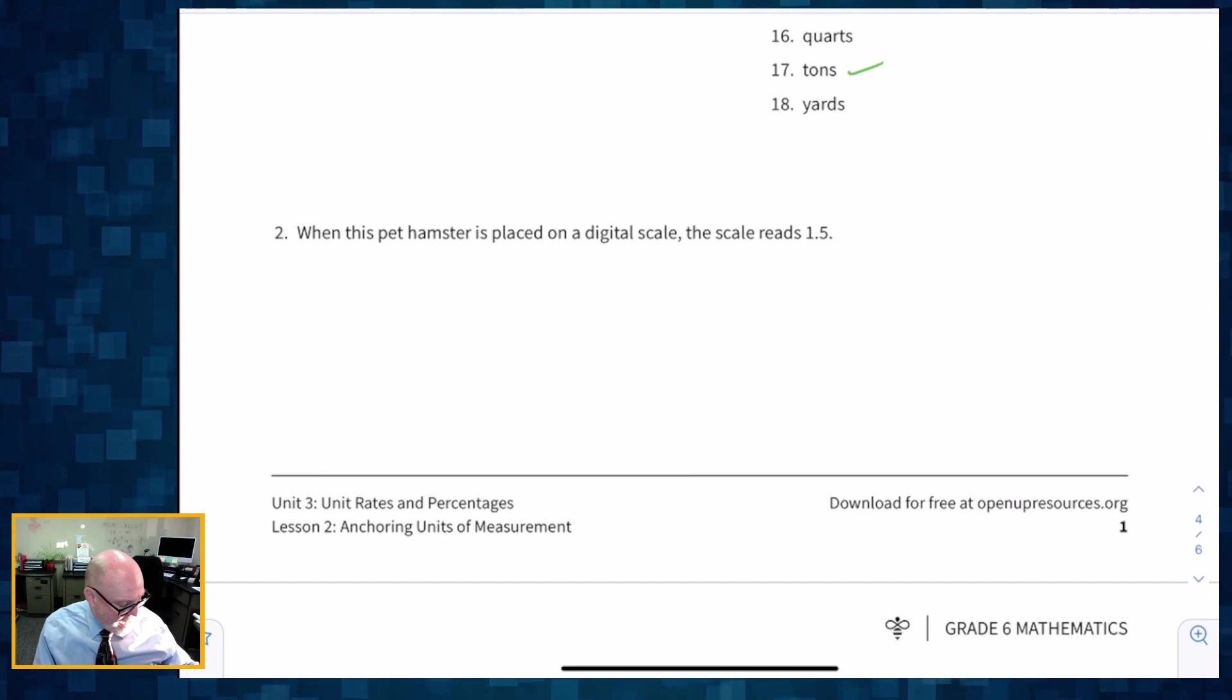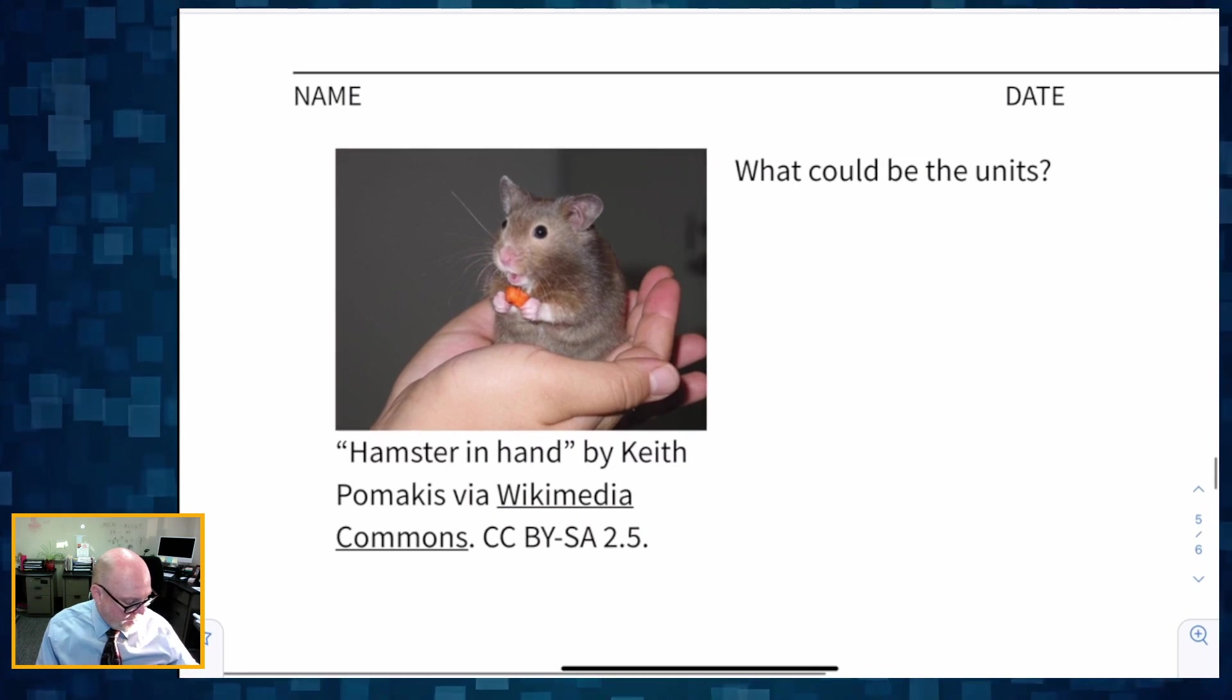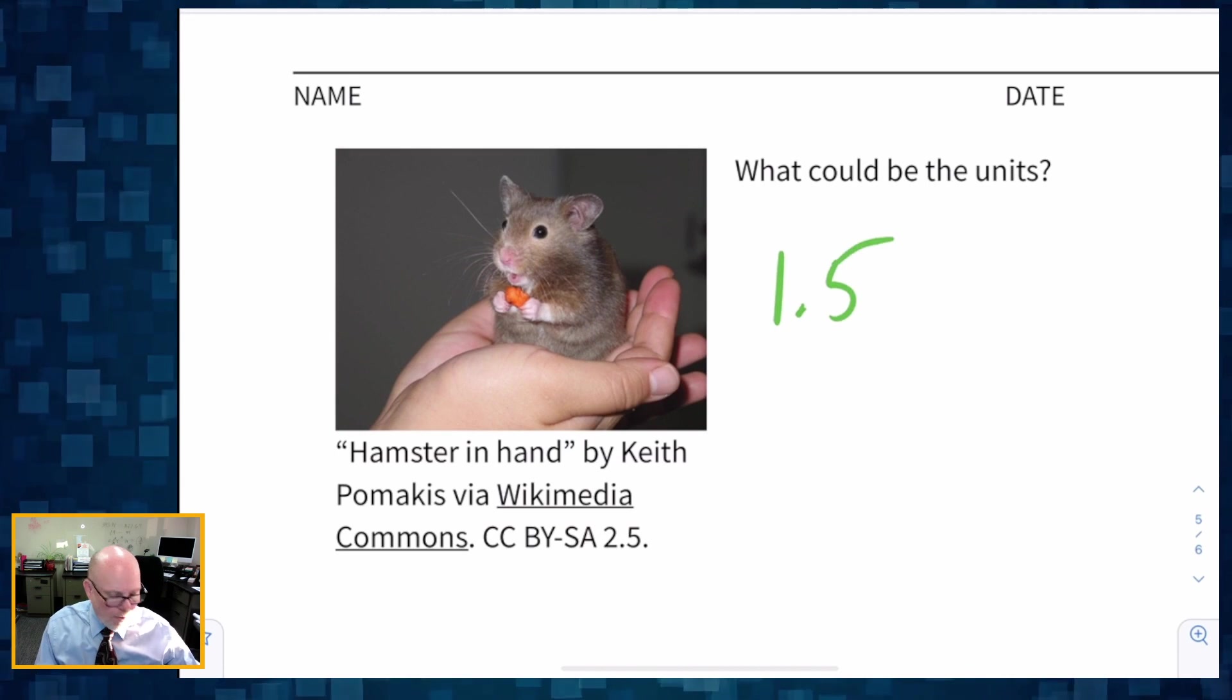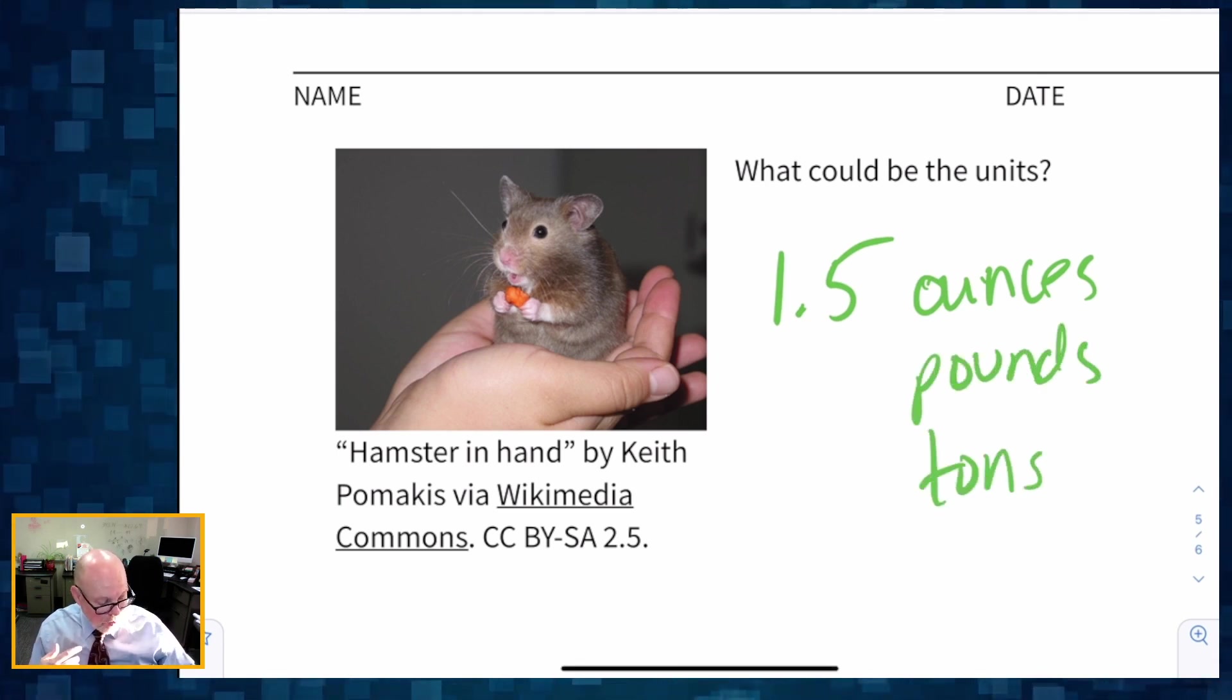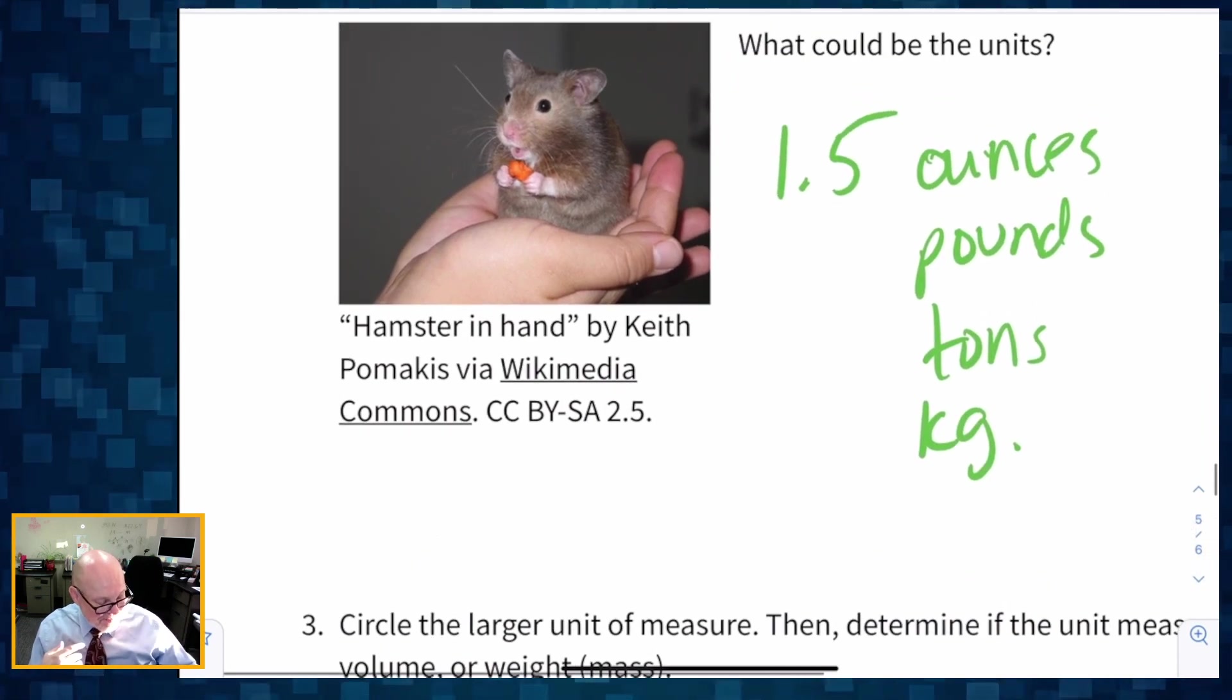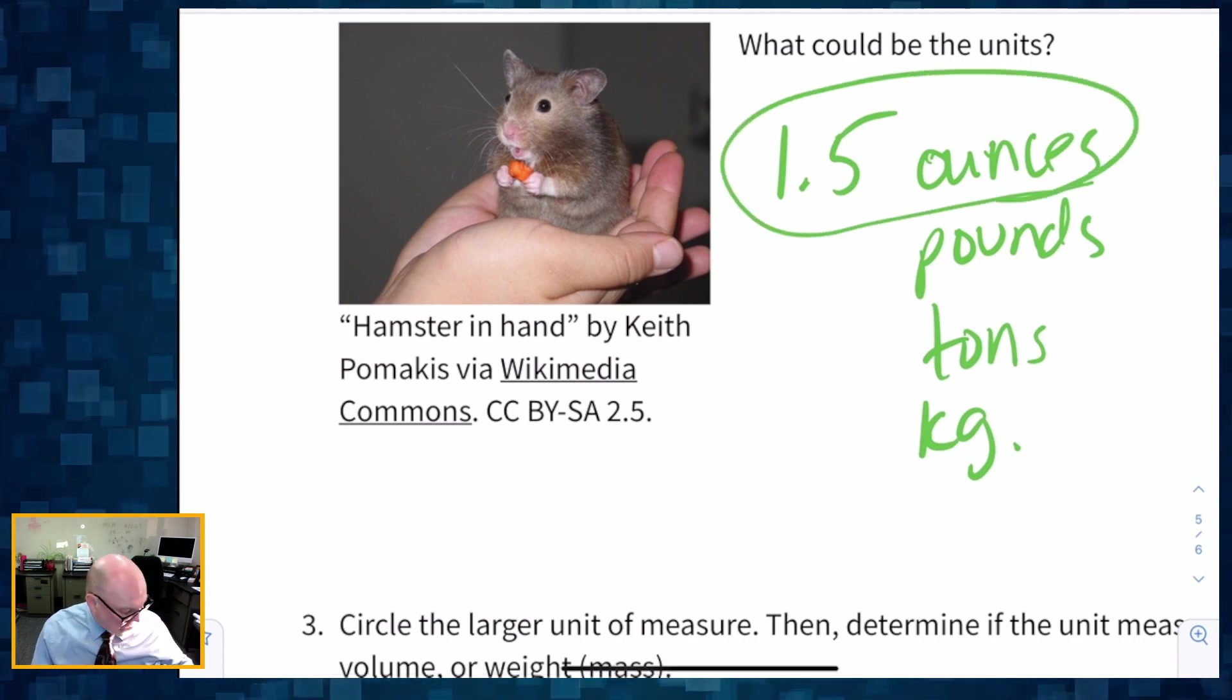When this pet hamster is placed on a digital scale, the scale reads 1.5. So we got this little guy, he's put on a scale. It says 1.5. What are the units? 1.5 what? Could it be 1.5 ounces? Could it be 1.5 pounds? Could it be 1.5 tons? Could it be 1.5 kilograms? So I'm going to guess probably maybe ounces, maybe, probably.